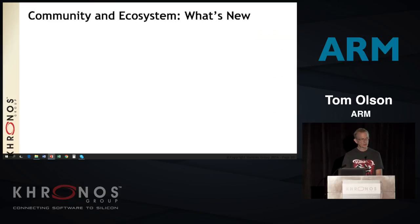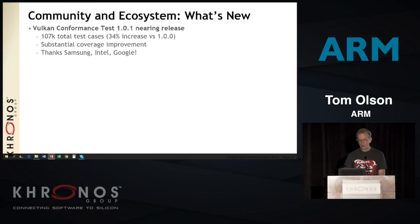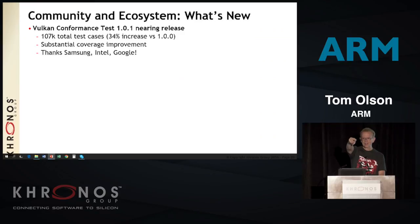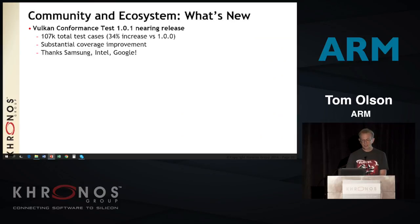Among the 431 projects on GitHub are six or so that Khronos actually owns. One of those is the conformance test. We had conformance 1.0.0 the day of launch, but we've been working hard since to expand it. The latest release is frozen — in feature freeze and final soak. It has 28,000 new test cases compared to 1.0.0. The coverage is much better. We're grateful to everyone who participated, but particularly to Samsung, Intel, and Google, who did the lion's share of the work.